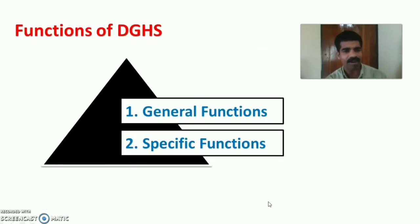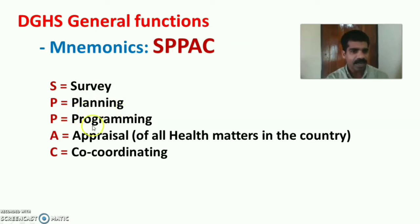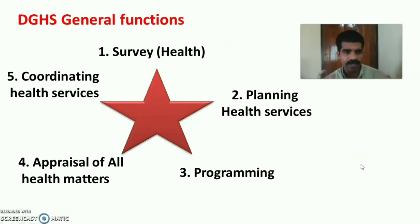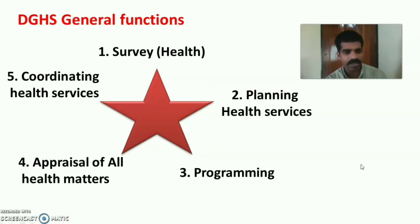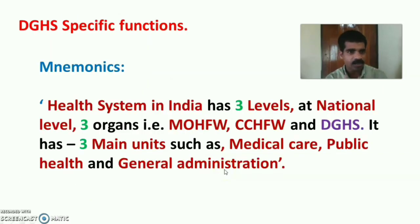The functions of DGHS are classified into General Functions and Specific Functions. The mnemonic for General Functions is SPPAC: S stands for Survey, P for Planning, another P for Programming, A for Appraisal or Monitoring of all Health Matters in the Country, and C for Coordinating. General functions include Health Survey, Planning Health Services, Programming Health Organization, Monitoring or Appraisal of all Health Matters, and Coordinating Health Services in the nation.